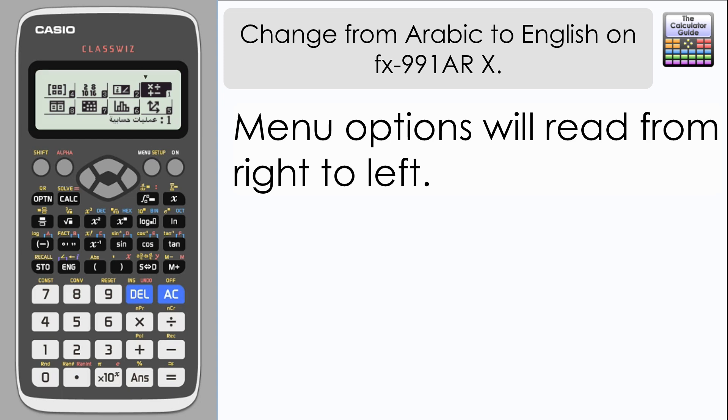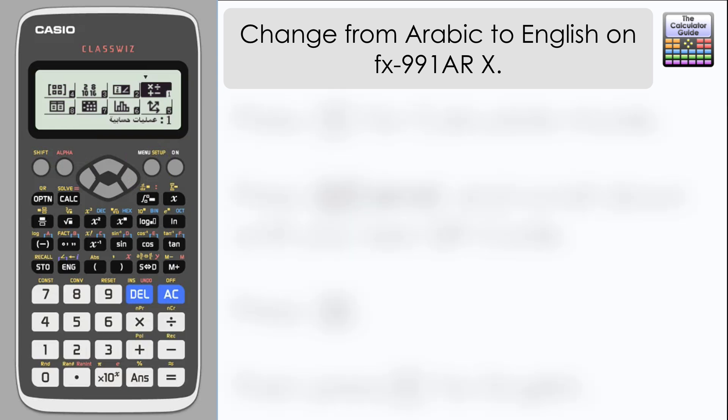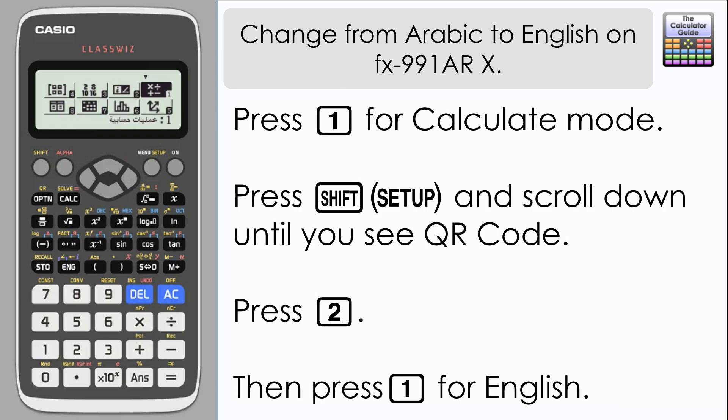You can see here that we've got the same modes as the regular ClassWiz reading from right to left as in Arabic, and the language used in the descriptions of the modes is Arabic. Now you can change this to English if you prefer and I'll show you how.